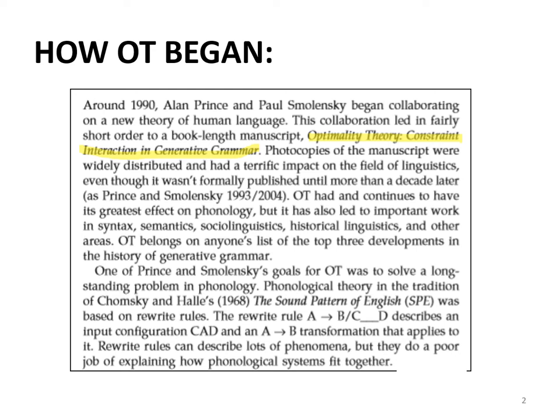To understand the relation between the underlying form (UR) and the surface form (SR): native speakers of a language know certain forms — that is the underlying form. But when linguists go to the field and collect data, we don't see the underlying form; we get the surface form. The native speaker knows something and performs or speaks something else.